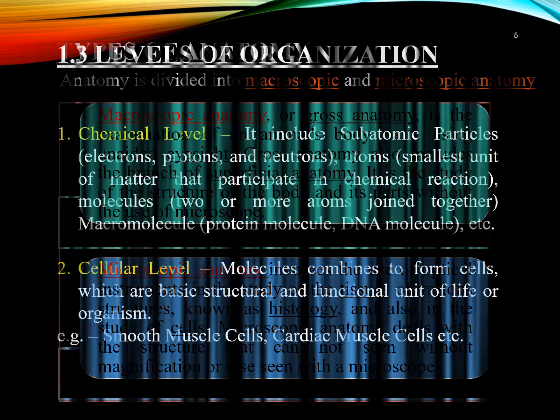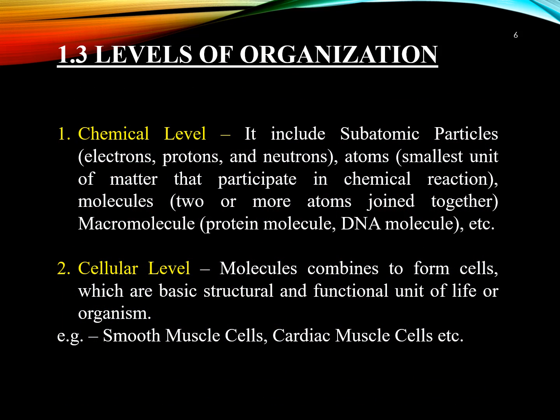Now we are going to discuss about levels of organization. There are six levels of organization. The first is the chemical level, which includes subatomic particles like electrons, protons and neutrons, atoms, molecules and macromolecules. The second is the cellular level, where molecules combine to form a cell, which is the basic structural and functional unit of life. Examples include smooth muscle cells and cardiac muscle cells.